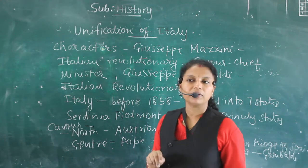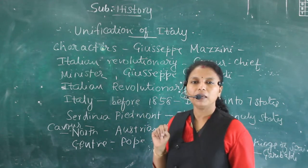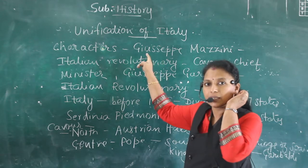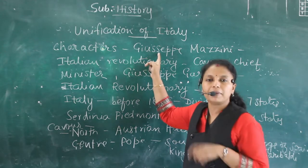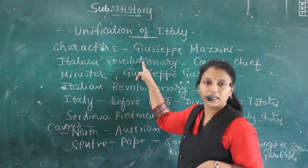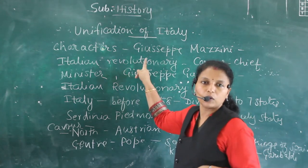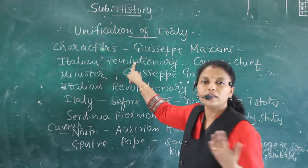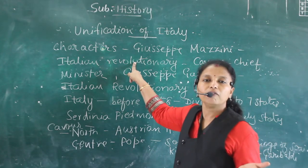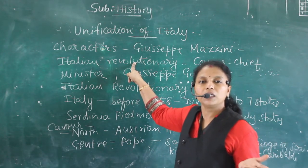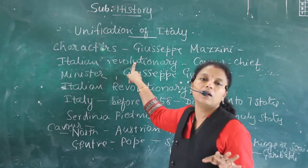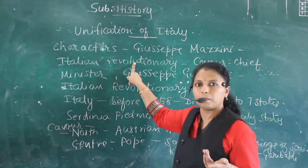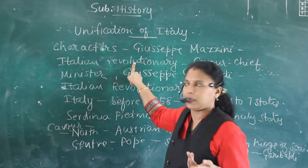In this Italian unification there were many important people. The first one was known as Mazzini — Giuseppe Mazzini — he was an Italian revolutionary. You have learned about him in the 1830-1848 revolutions. He had made the underground revolutionary movements 'Young Italy' and 'Young Europe'.